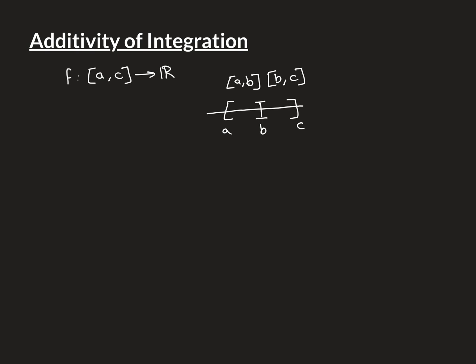The first part of the additivity property: if the function is Riemann integrable on [a, b] and Riemann integrable on [b, c], then the function is integrable on the entire interval [a, c]. Moreover, the value of the integral of f over [a, c] equals the integral of f over [a, b] plus the integral of f over [b, c]. That's why it's called additivity — you add the values of the integrals over the two separate intervals to get the value of the integral over the entire interval.